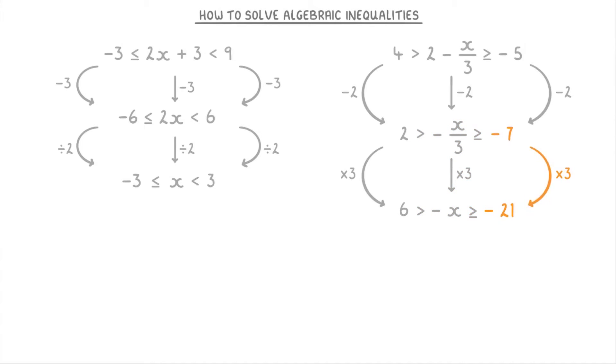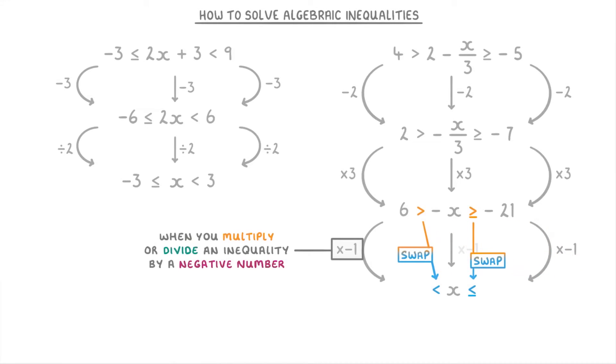And finally we can multiply everything by -1 to make our x term positive. But remember that when you multiply or divide an inequality by a negative number like this, you also have to swap the inequality signs around. So it becomes -6 < x ≤ 21.